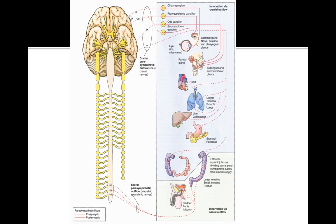To summarize: the ascending and transverse colon is vagus nerve, and the descending and rectosigmoid is pelvic splanchnic nerve. The entire small intestine is vagus nerve.